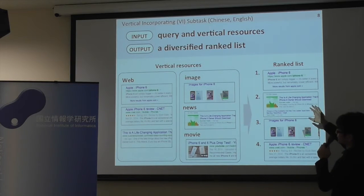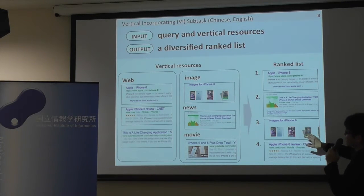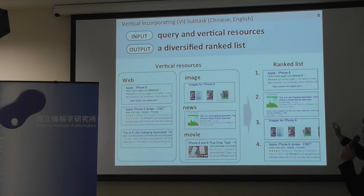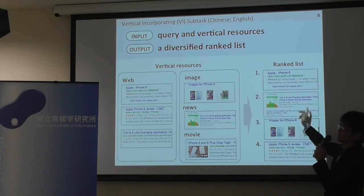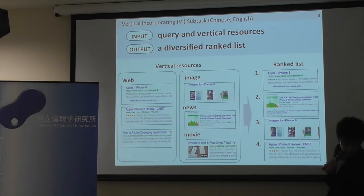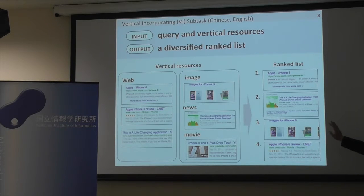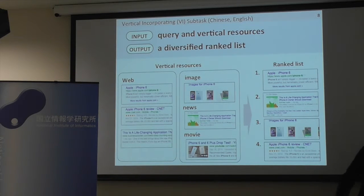Also, for each sub-topic, the system has to identify the relevant search results to satisfy the different user intents. The challenge is that the system has to produce diversified results and also identify the relevant verticals for each sub-topic.